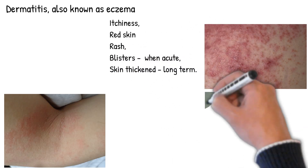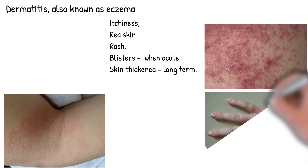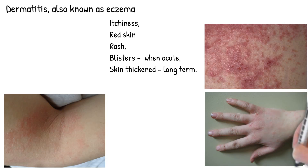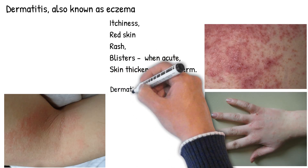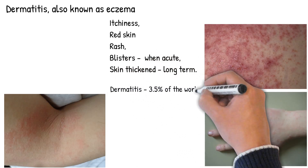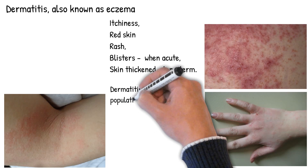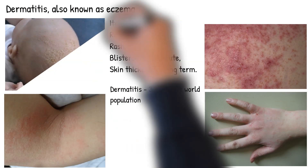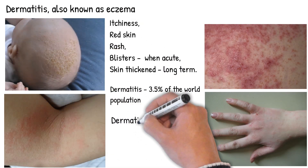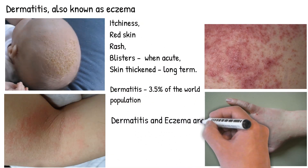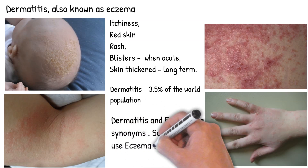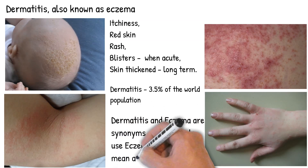Dermatitis affects approximately 3.5% of the world population, more common among children and females. Dermatitis and eczema are synonyms, but some people use the term dermatitis to imply an acute condition and eczema a chronic one. Some people use eczema specifically to mean atopic dermatitis.